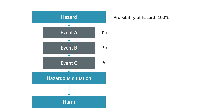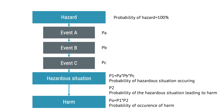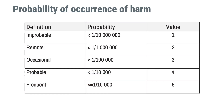These events all need to occur in sequence in order for the hazardous situation to arise. In this case, P1 equals pA times pB times pC. And in order to get to P0 — the probability of occurrence of harm — we need to factor in P2, the probability of the hazardous situation leading to harm, which in the previous example was extremely low. Finally, P0 equals P1 times P2, where P1 is the result of the previous sequences or combinations of events and their respective likelihoods. When you have figured out the probability of occurrence of harm, you can find the right number in your probability of occurrence of harm table and transfer it to your hazard traceability matrix.